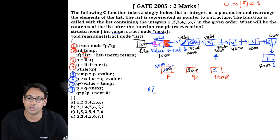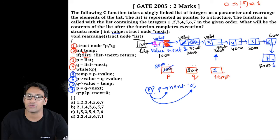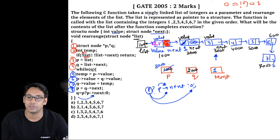Line 9: q = p ? p->next : 0. This is a conditional expression — if p is not null, q gets p->next; otherwise zero. Since p stores 3000 and that is not null, q will store p->next, which is 4000. So q now stores 4000.